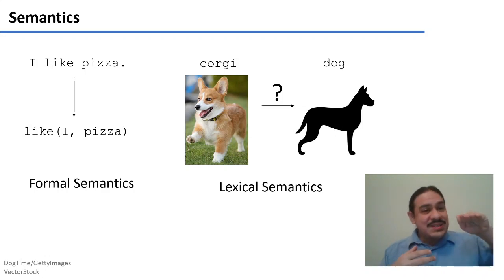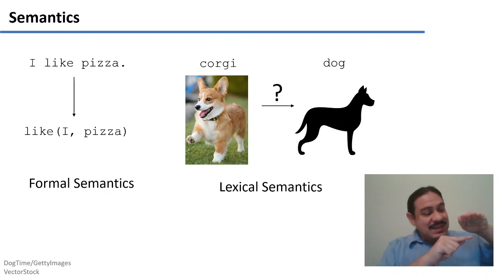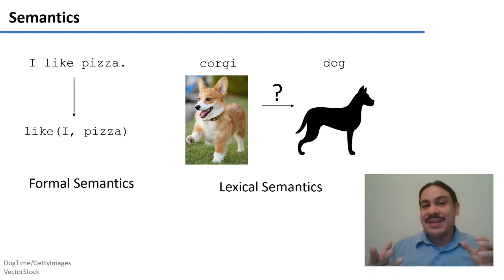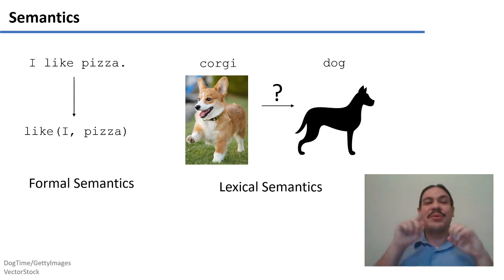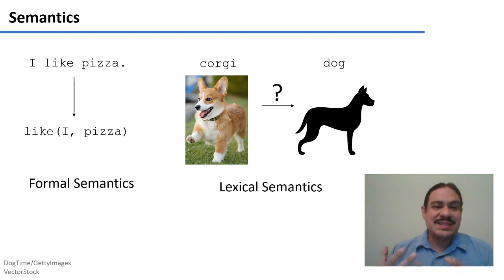For example, you can have a kind of entity which is a person, the name of the person is I, and an attribute of the person is that they like, and the value is pizza. Or you can have it as a directed graph, where you have the two entities I and pizza, and you have an arrow going from one to the other saying 'like.' This analysis of parts of sentences is formal semantics.